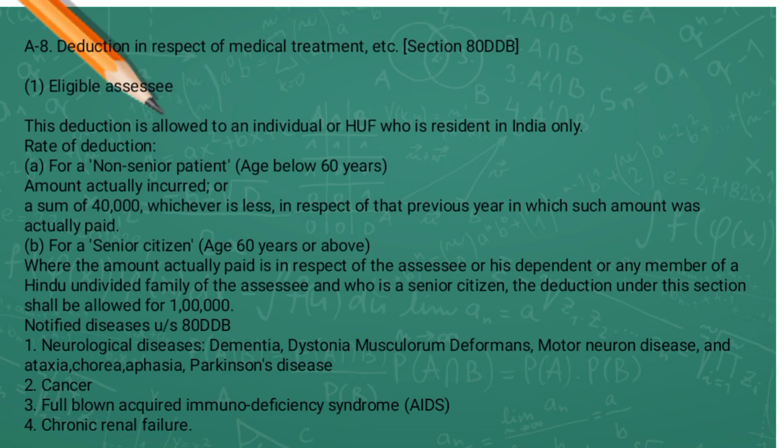Now let's discuss the rate of deduction allowed under section 80DDB. If the assessee is a non-senior patient whose age is below 60 years, then the actual amount incurred or rupees 40,000, whichever is less, shall be allowed as deduction. If the assessee is a senior citizen whose age is 60 years or above, then with respect to the amount actually paid for the assessee or his dependent or any member of HUF who is a senior citizen, the deduction shall be allowed up to rupees 1 lakh.